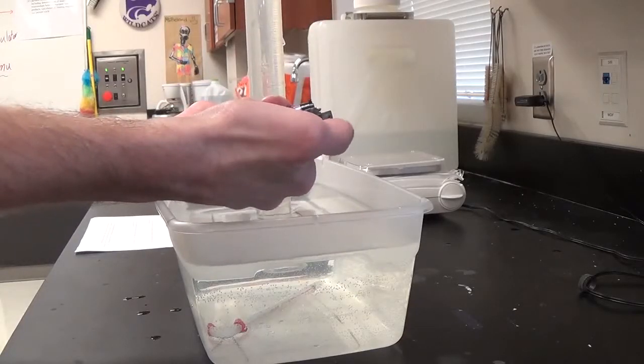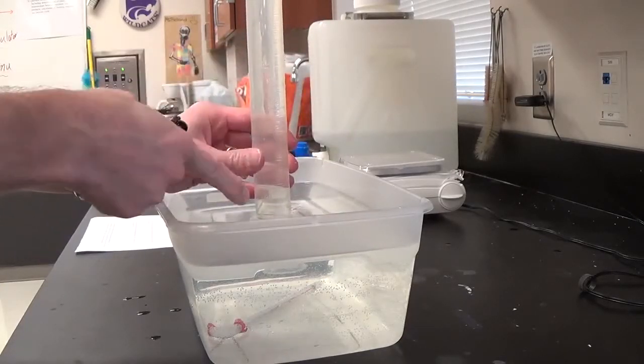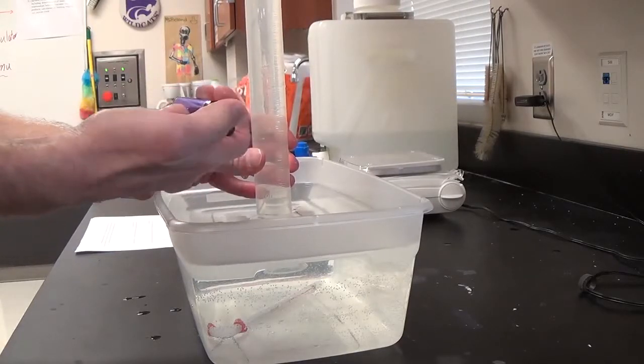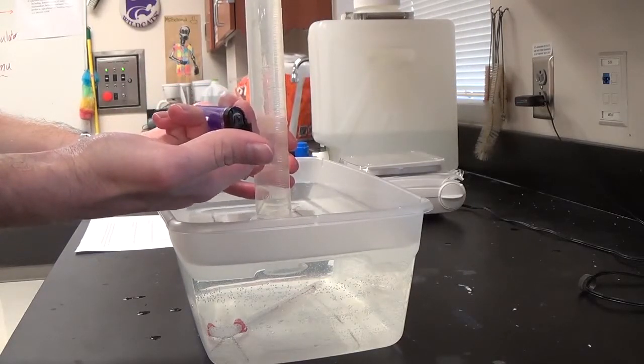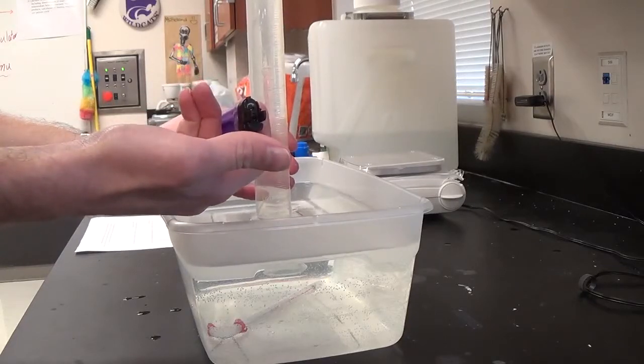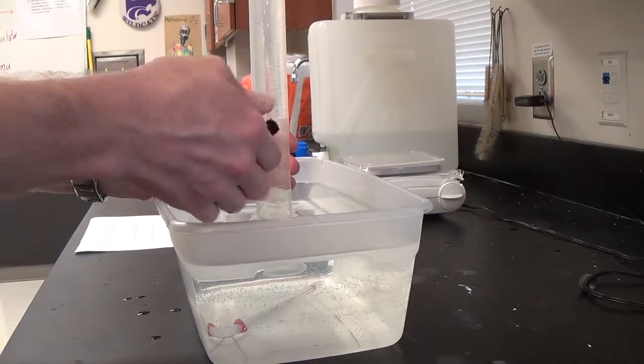Next you're going to put the lighter underneath so that when the bubbles come out, they'll be trapped in the graduated cylinder. When they come out of the lighter, you want to catch all of the gas, so don't push the button before you put it in the water.